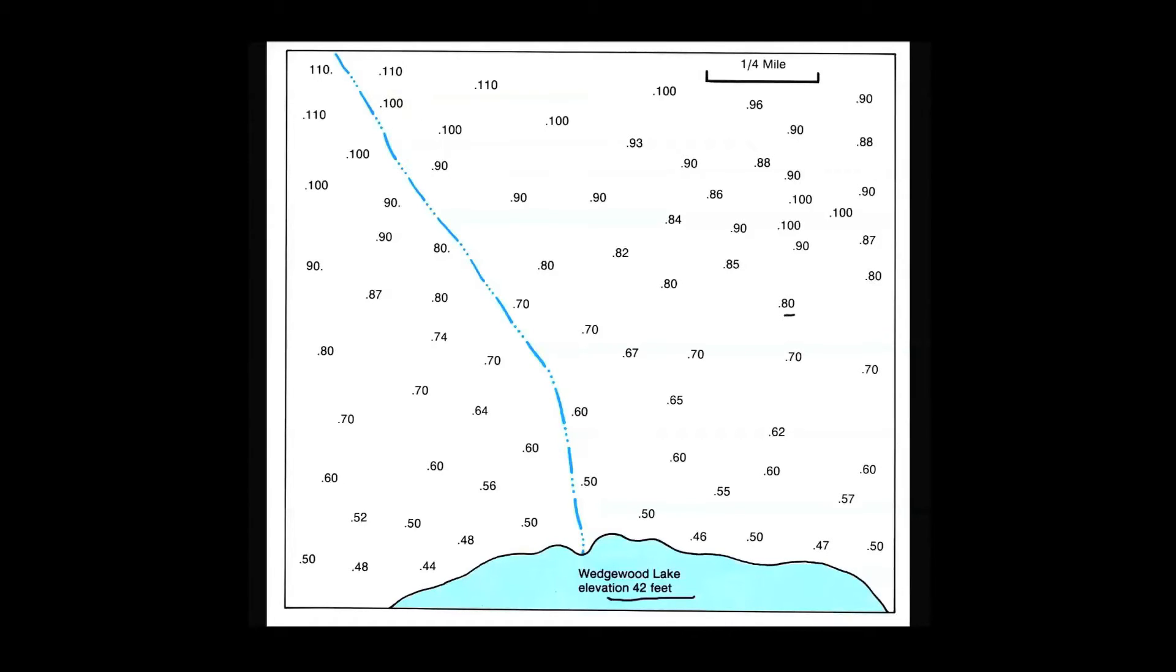When I get started on a project like this, I usually start near a known elevation. In this case, I'm going to start in the south portion of the map because I know this shoreline is at 42 feet above sea level. That defines the shoreline. Everywhere along it's 42 feet above sea level. And I see some 50 foot points that I'm going to connect. I'll be contouring this map on a contour interval of 10 feet.